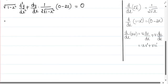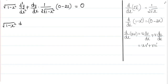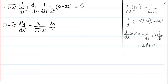We can write this equation as root of 1 minus x squared into d squared y by dx squared. Taking out the minus sign, the 2 in the numerator and the 2 in the denominator cancel, leaving minus x by root of 1 minus x squared into dy by dx, equal to 0.